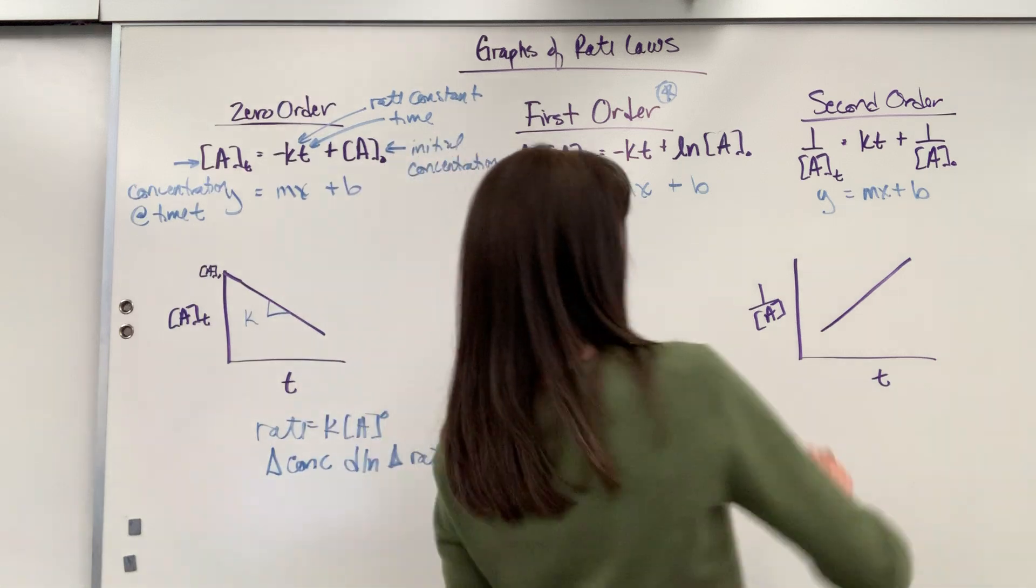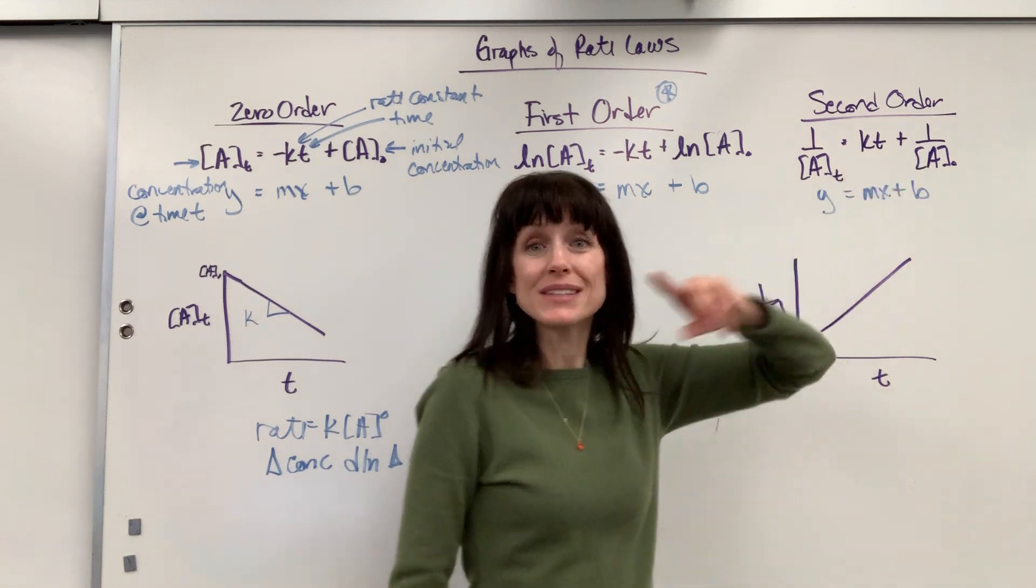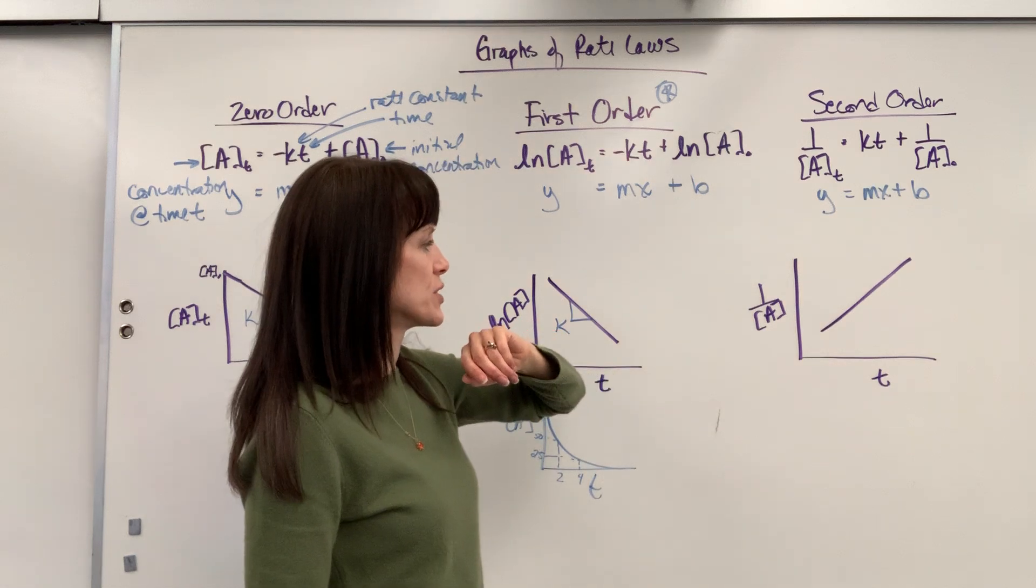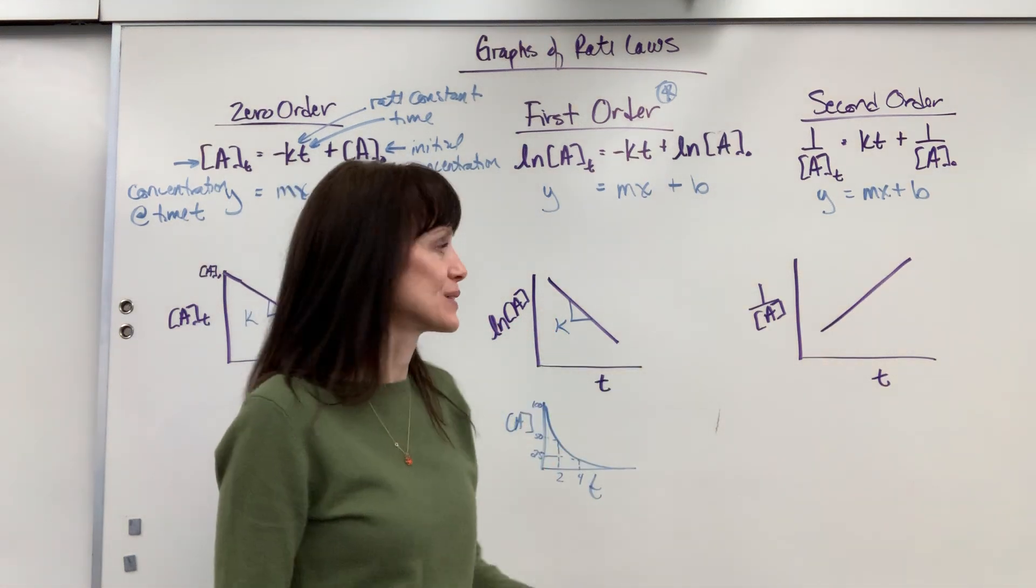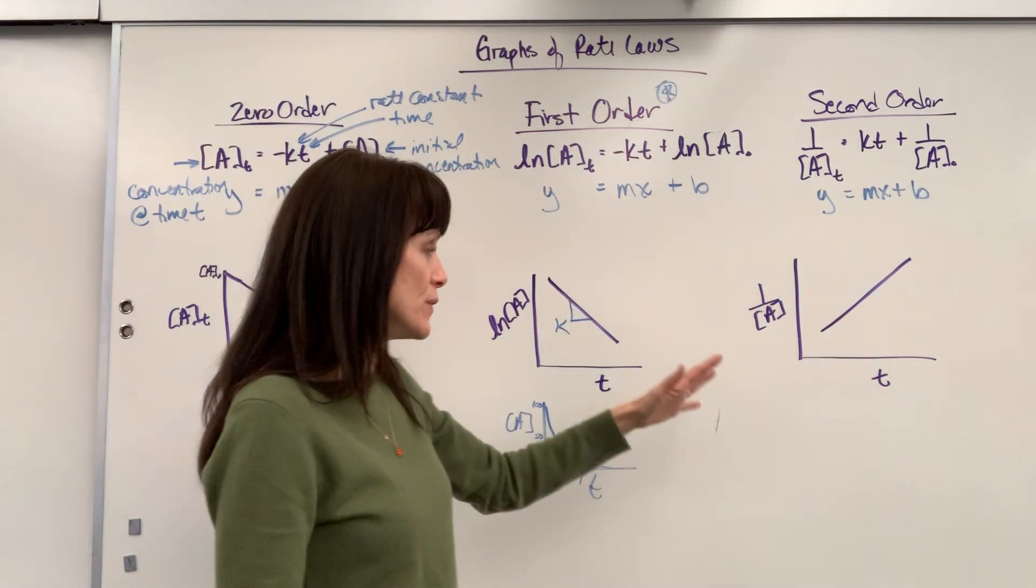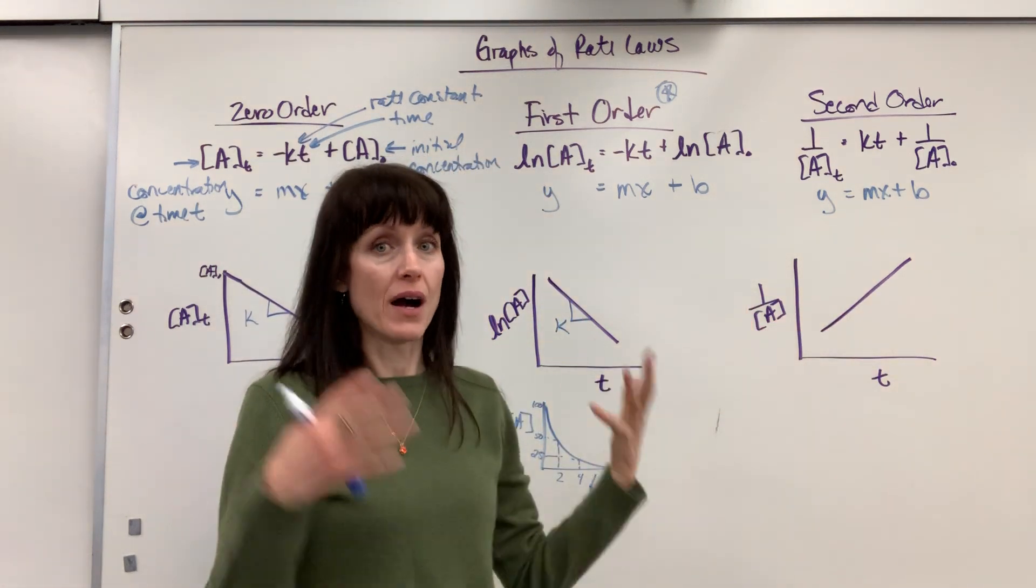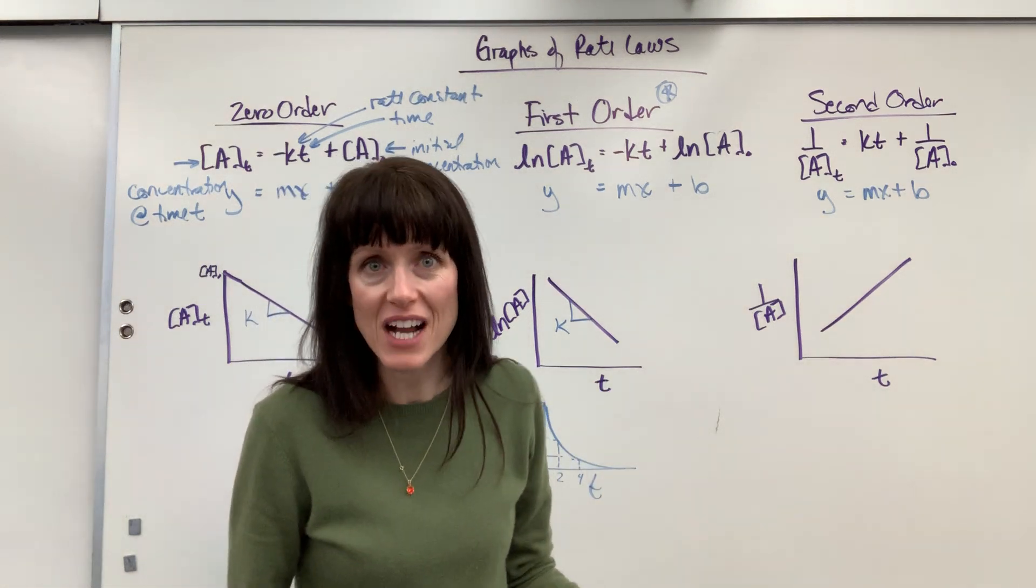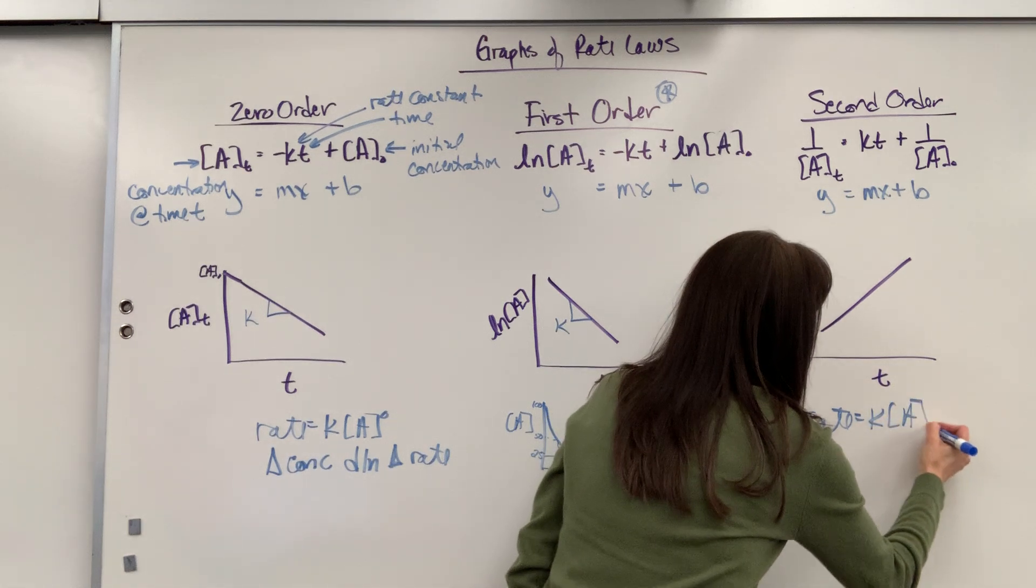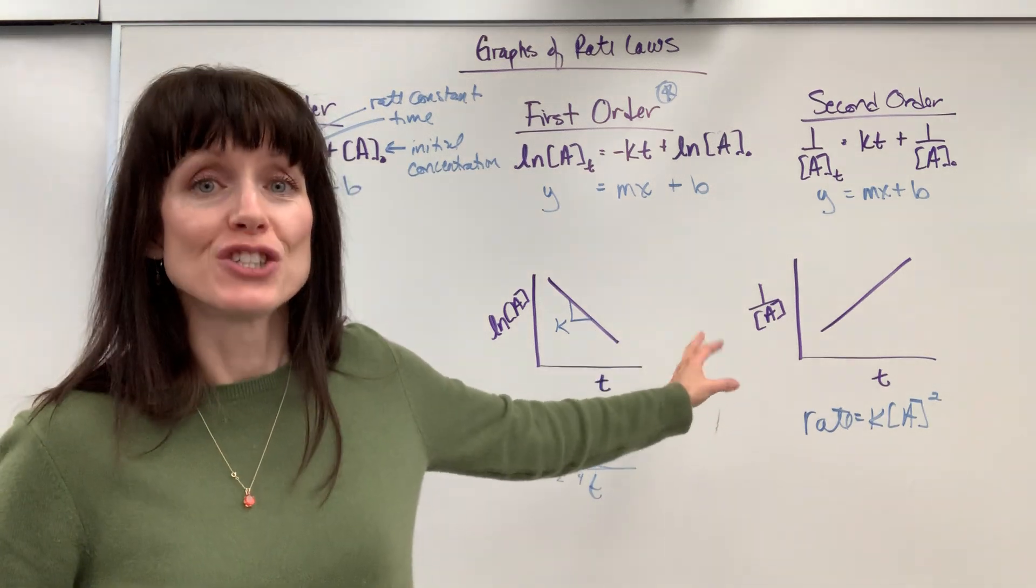Second order. Here's our equation: 1 over A sub T, that's the initial concentration, equals KT. Notice this one's positive, it's not negative, plus 1 over the initial concentration. This is a positive slope. Notice the axis: 1 over A versus time. If you see this linear positive slope and the y-axis is 1 over A, automatically you go "oh great, it's a second order reaction." And this is how you'd write it: rate equals K times the concentration of A to the second order. You're expected to be able to identify that just from the graph.